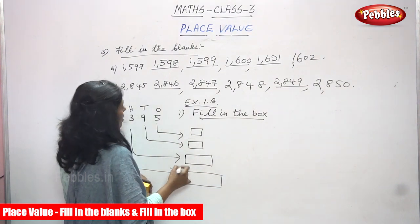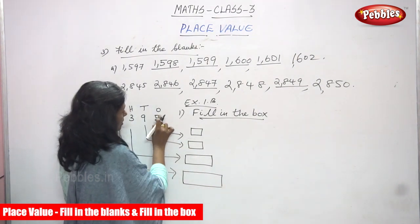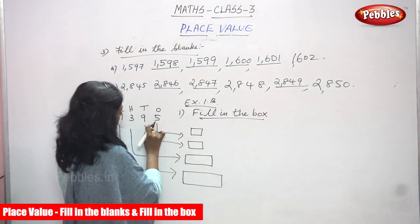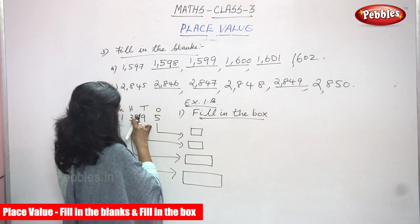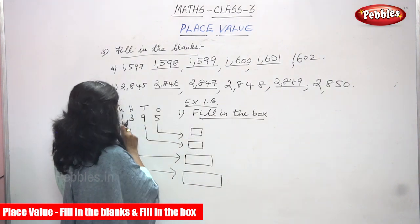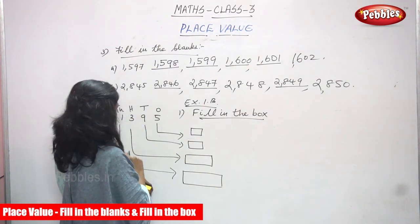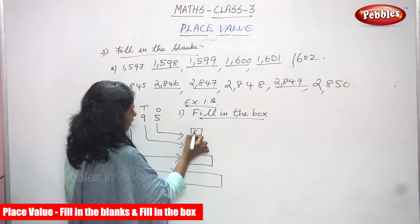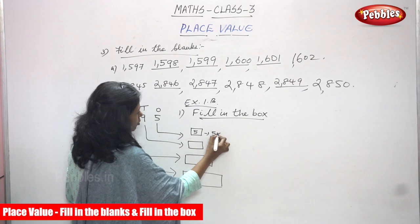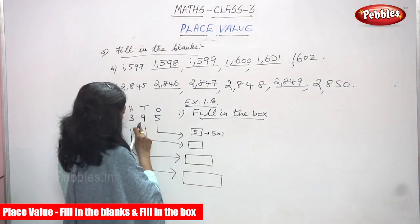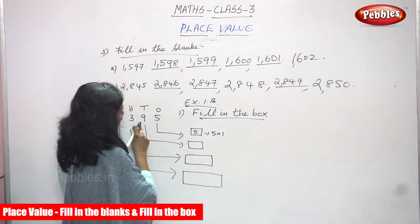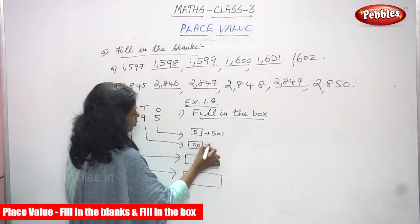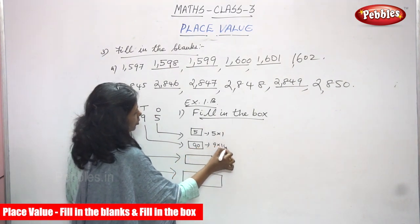Exercise 1.B. The answer is: in the ones place, what is the number? 5. What is the number in the tens place? 9. What is the number in the hundreds place? 3. What is the number in the thousands place? 1. So in ones place the number is 5 — that means 5 into 1, you get 5. And what is the number in tens place? That is 9 in tens — that means 90. So 9 into 10, you get 90.